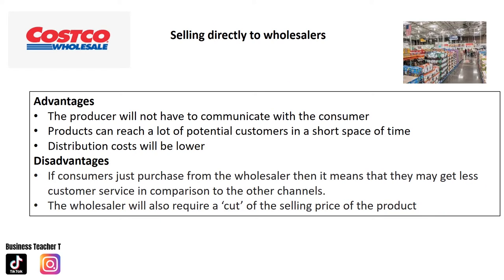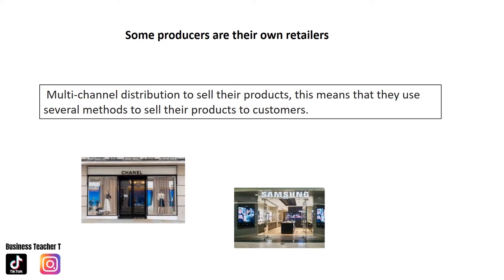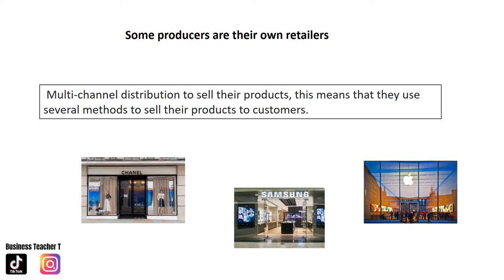A disadvantage of using wholesalers is that consumers may get less customer service compared to other channels. Another disadvantage is that the wholesaler also requires payment, as the producer is not selling directly to the consumer. It should be noted that some producers are their own retailers — Apple, Samsung, and Chanel control their own distribution, display, and sales by running their own shops. This is a key example of multi-channel distribution.